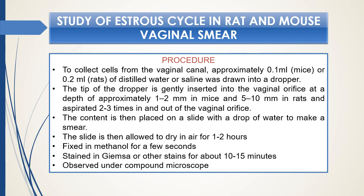For studying the estrus cycle, we can use a simple technique called the vaginal smear technique. We collect vaginal cells, place them on a slide, make a smear, follow a procedure, and stain with Giemsa stain, then observe the slide under a microscope. We can see four different cell associations in four different phases of the estrus cycle, and it is very important to note that all these are different in different phases of the cycle.